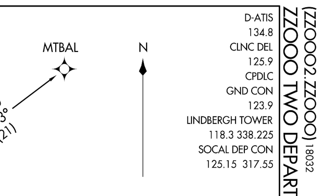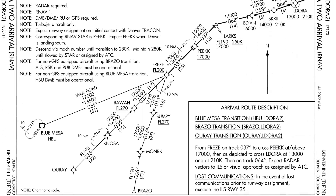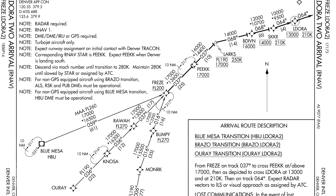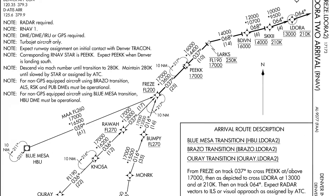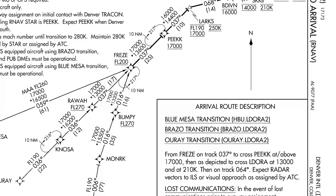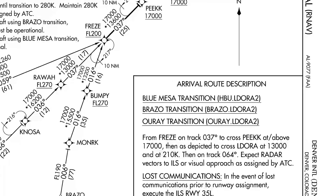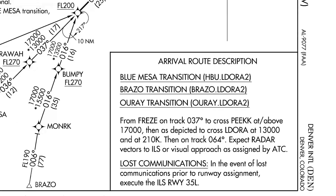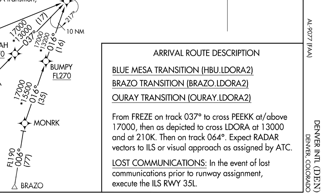After going over the SID, let's take a look at the STAR. The STAR we're using is called the Eldora 2. For this arrival there are three transitions we can use to enter the STAR: Blue Mesa, Brazzo, and O-Ray. These three transition waypoints will all lead you to FREEZE.